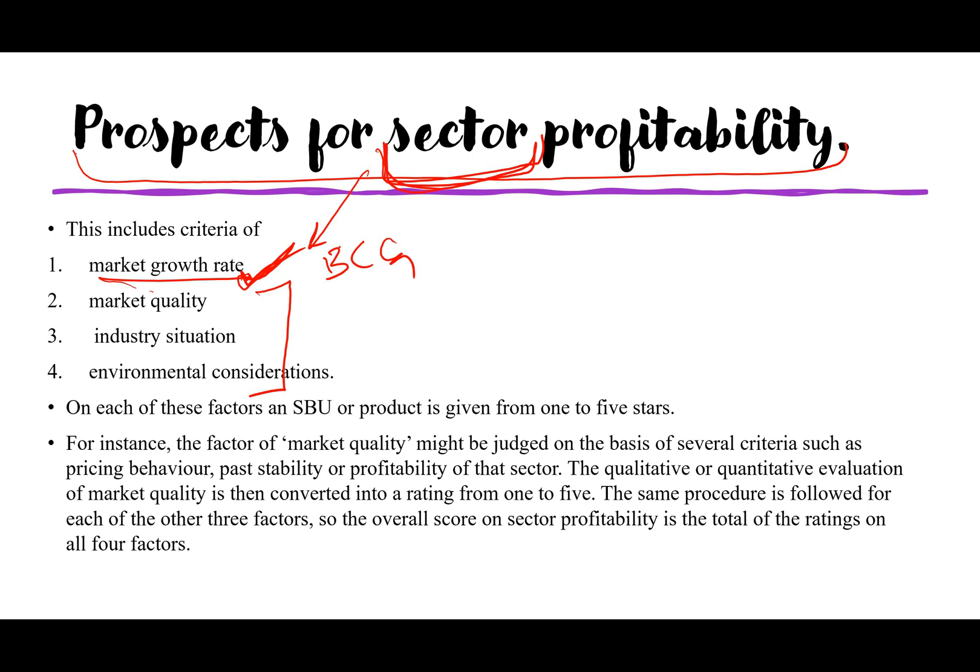When sector profitability is unattractive and competitive capabilities are also weak, the strategy is immediate 'Disinvestment.' The sector offers no opportunities and the company cannot compete, so nothing is being generated. The organization should immediately disinvest, withdraw all cash from this quadrant, and not waste further resources here. This completes all nine cells of the Directional Policy Matrix and the strategies for each.